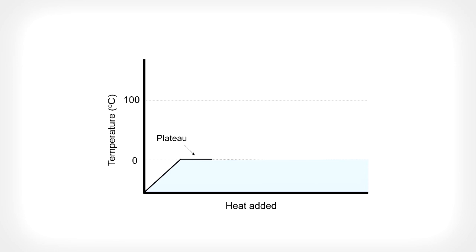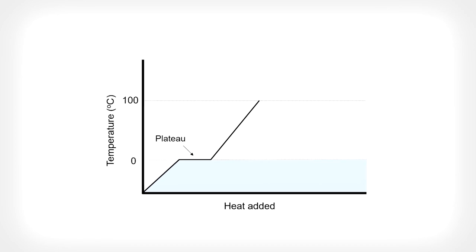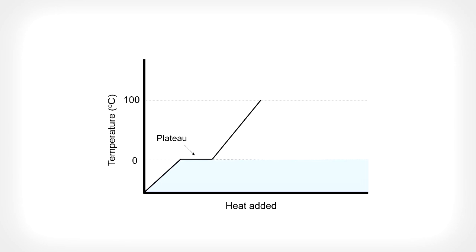After all the solid substance has been melted into liquid, the temperature of the liquid begins to increase as heat is absorbed. The liquid will then begin to boil when enough heat has been absorbed that the temperature reaches the boiling point. A plateau occurs.